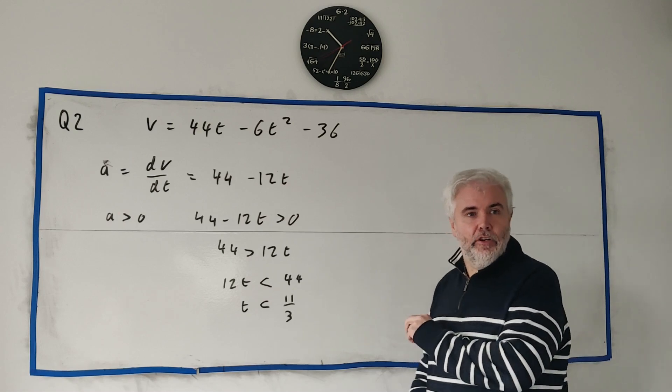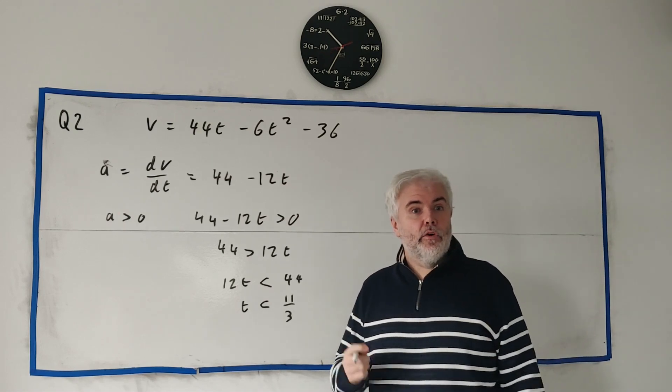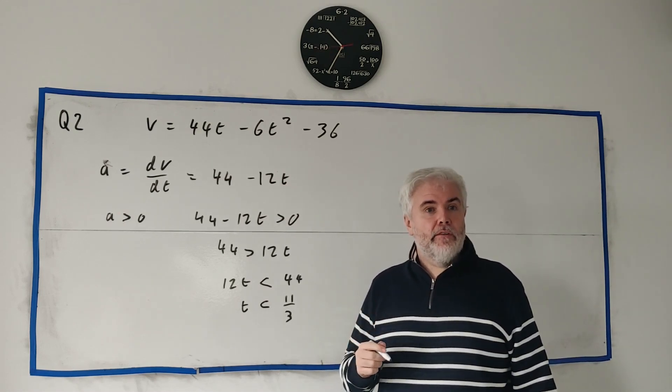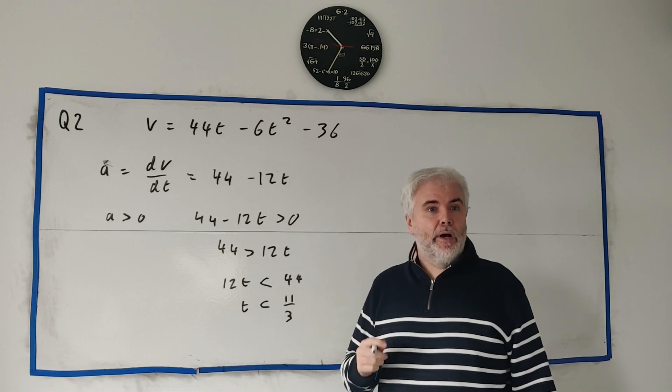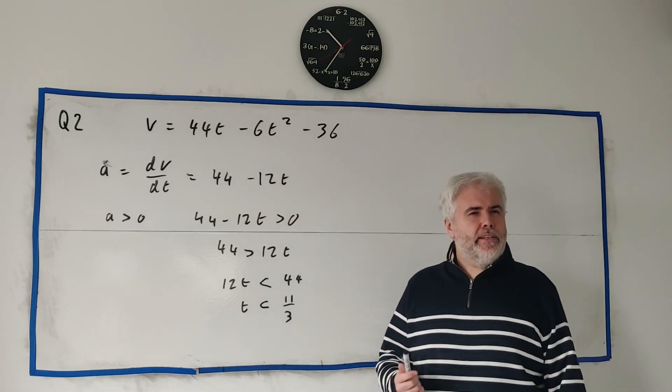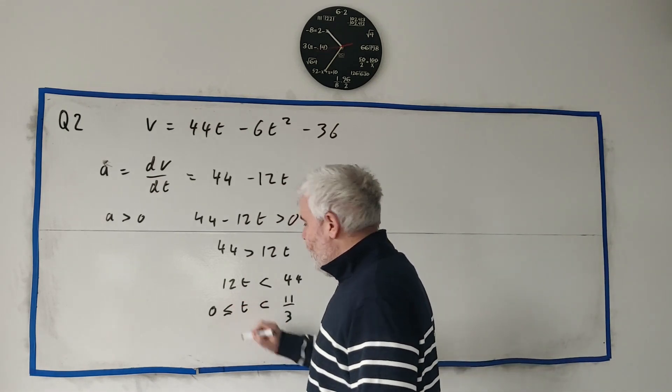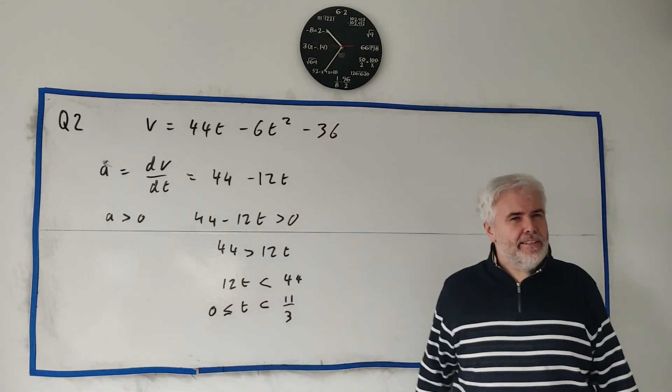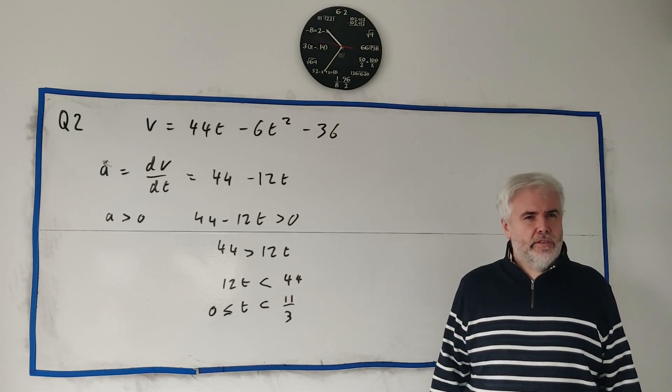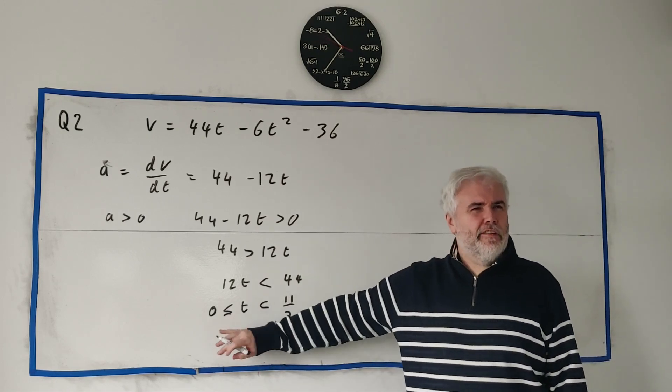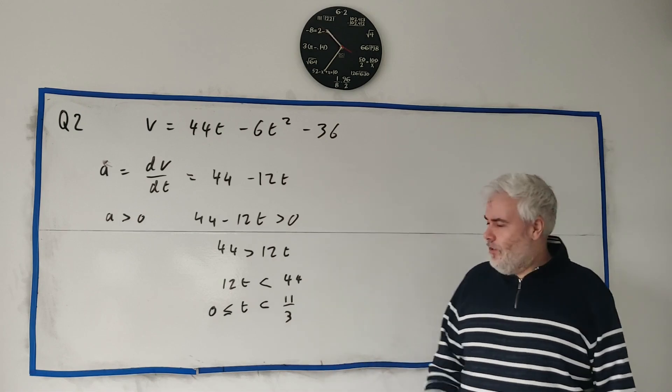We get t is less than 11 over 3. So the set of values for t for which acceleration of the particle is positive. I guess they would want t to be bigger than 0 or bigger than equal to 0, because in this case time would be positive. I don't think they care if you don't have that in. Anyway, that's the answer in part A.